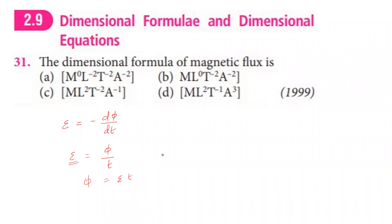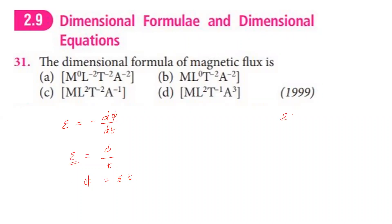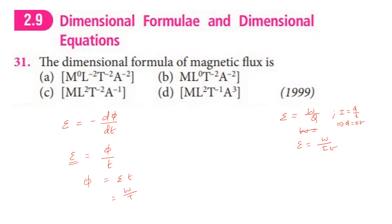EMF equals work done divided by charge. Work done is energy, so EMF equals work done divided by charge. Charge equals current into time, so EMF equals work done divided by current into time. Therefore EMF dimension is ML²T⁻² divided by (I × T).